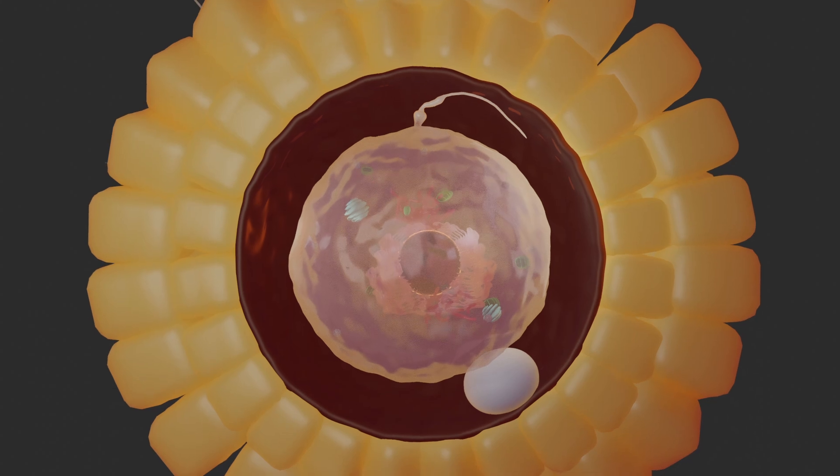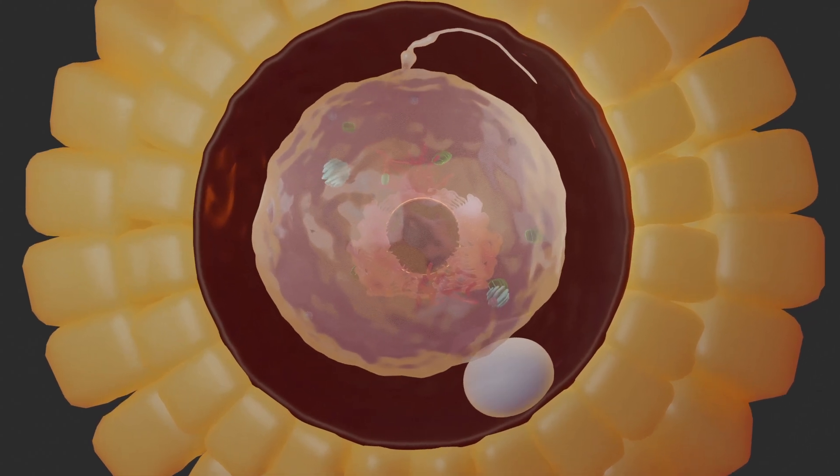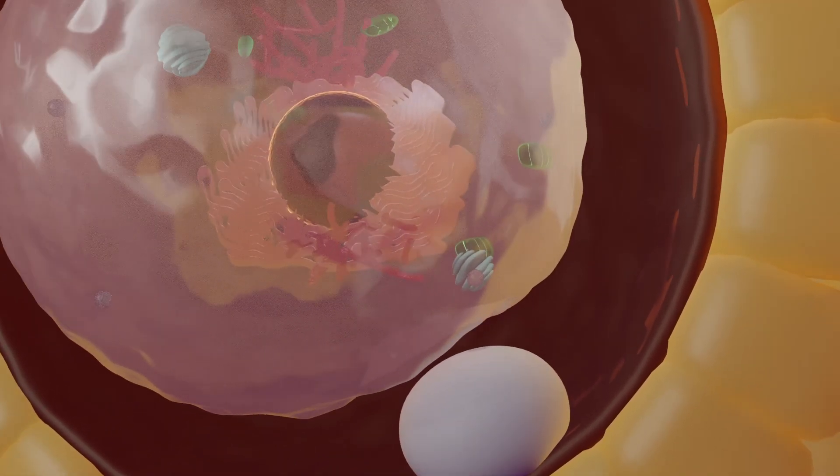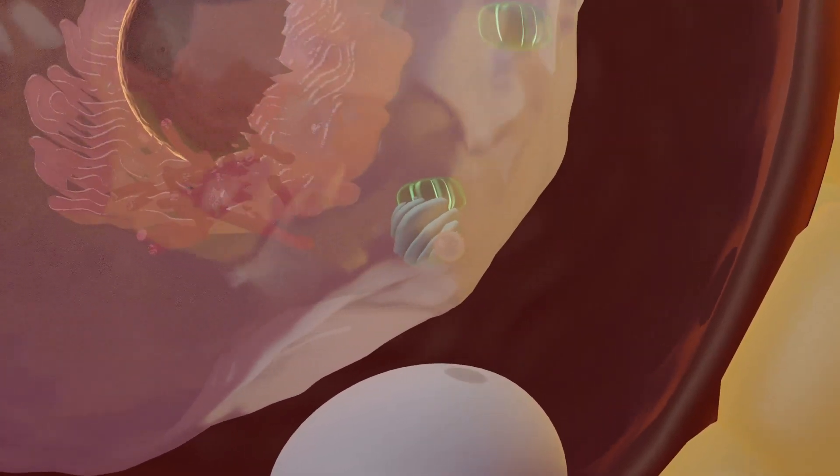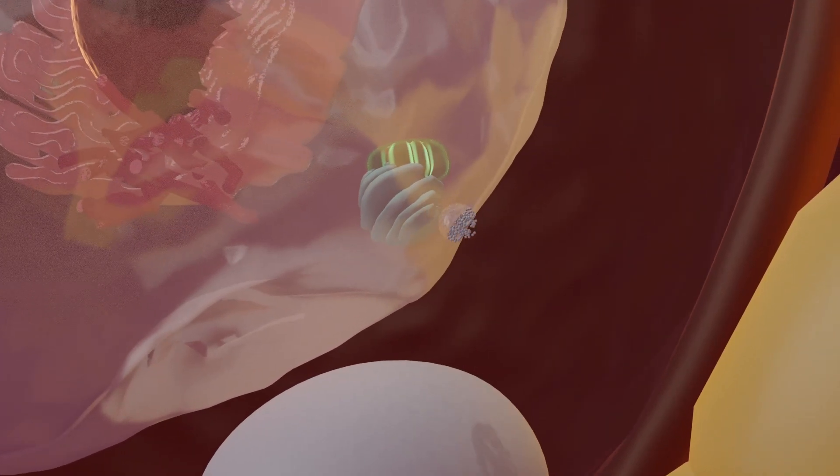The cortical granules are released, which cause a change in the zona pellucida. This change makes the zona pellucida impenetrable to other sperm, ensuring that only one sperm can fertilize the egg.